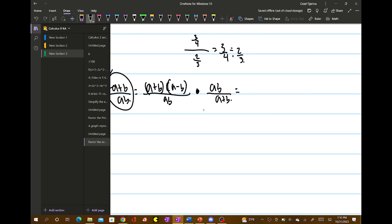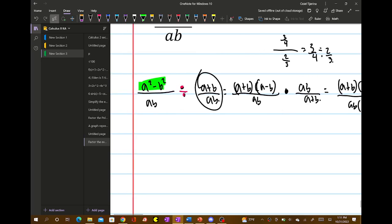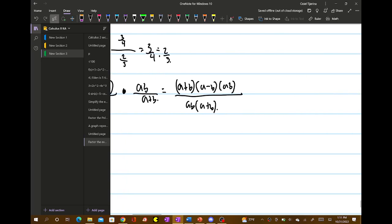Now, we're going to bring it all together. a plus b times a minus b times ab over ab times a plus b. So we have ab cancels out and a plus b cancels out. So this simplifies as a minus b. And this is your final answer.